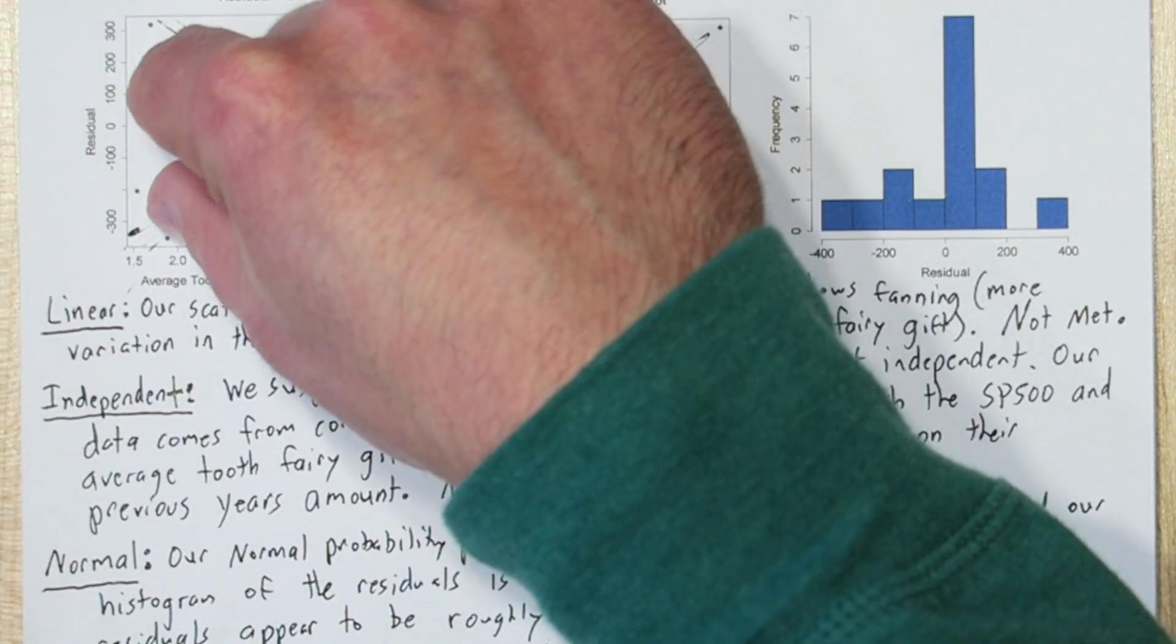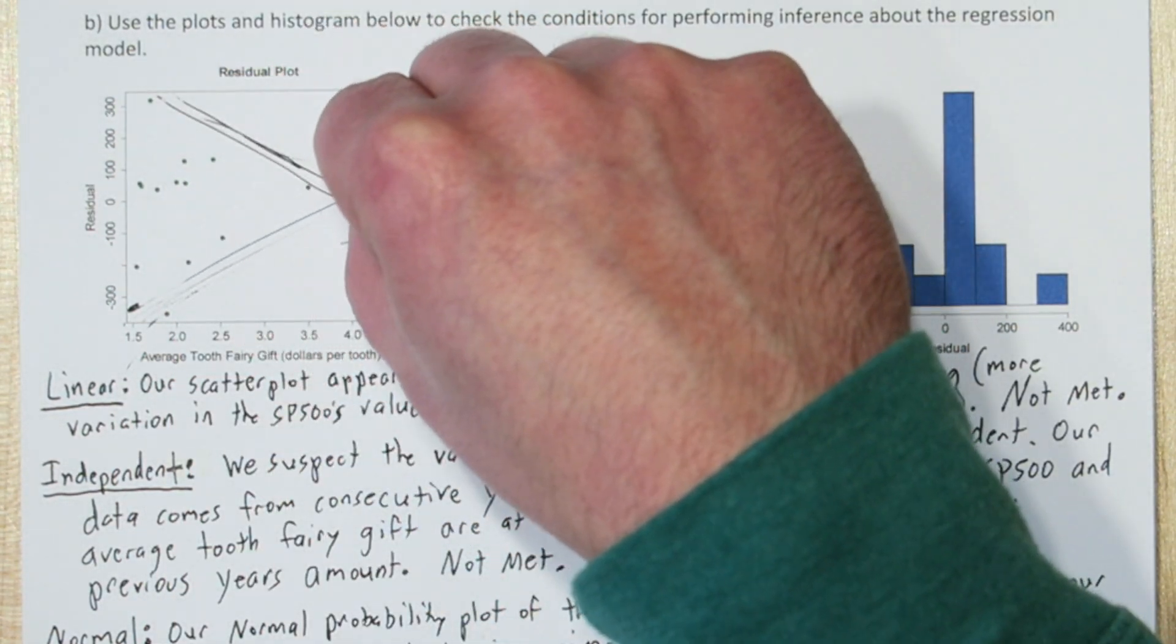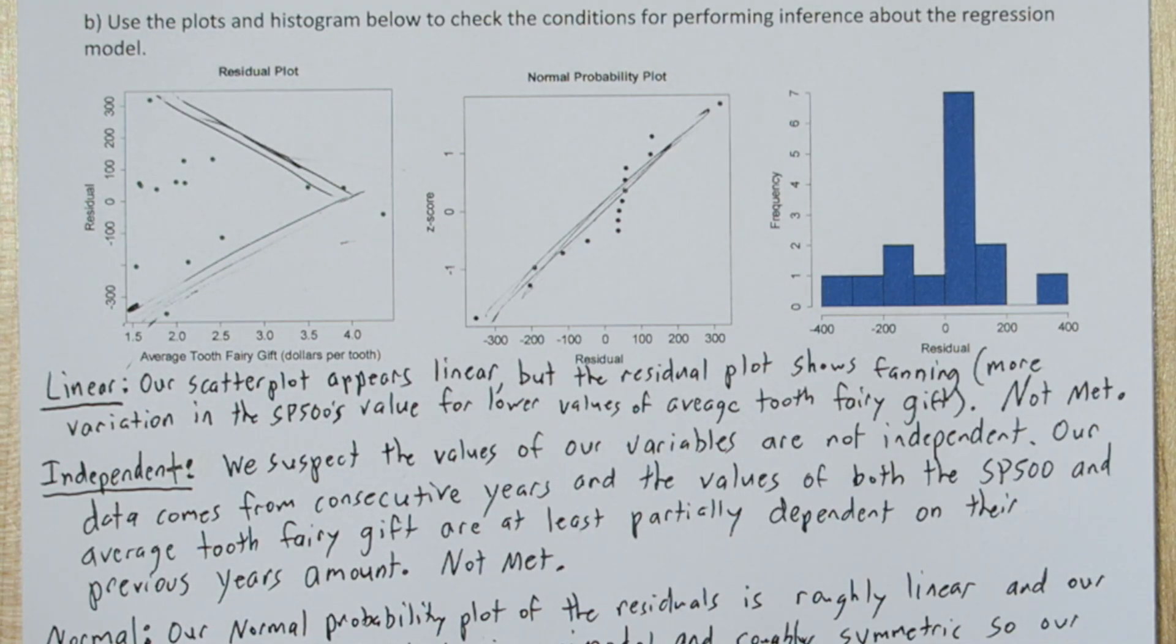We can clearly see in the residual plot that we have large residuals for low average Tooth Fairy gifts and small residuals for high average Tooth Fairy gifts. This means our model does a better job predicting the S&P 500 for higher average Tooth Fairy gifts.